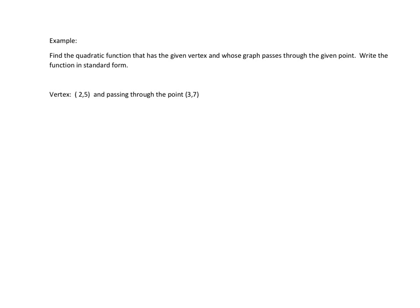But let's take a look at this particular example. It says find the quadratic function that has the given vertex and whose graph passes through the given point. Write the function in standard form. So that means we want to write our equation in this particular format: y = a(x - h)² + k.